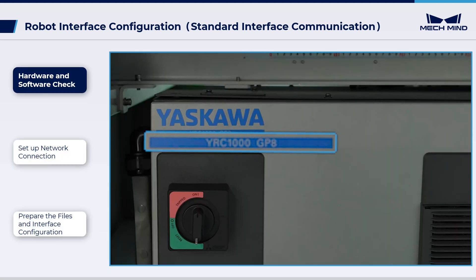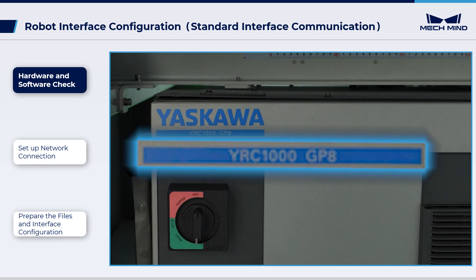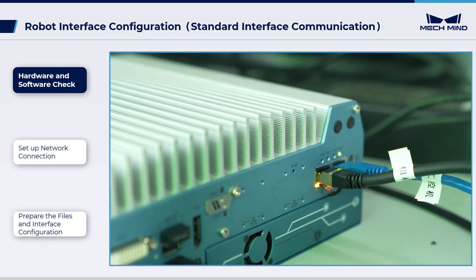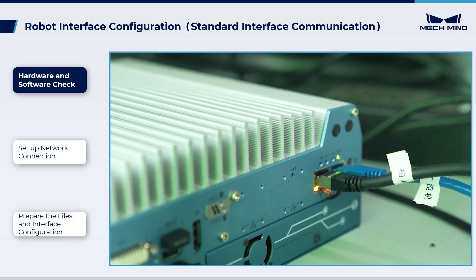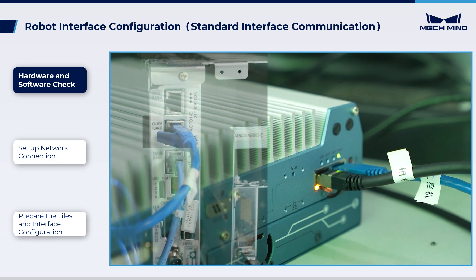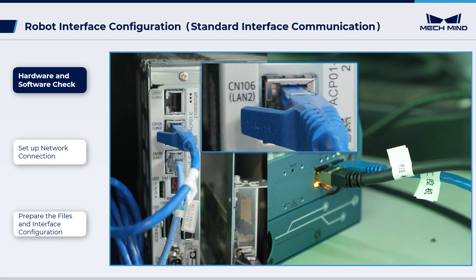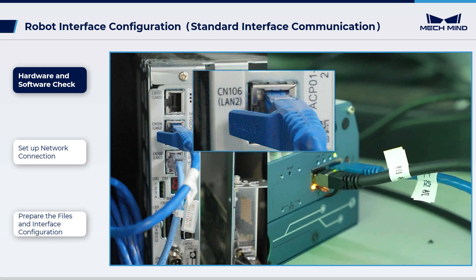First, let's start with the preparatory tasks. Please make sure that the chosen robot is a 6-axis Yaskawa robot, and confirm that the controller is YRC-1000. Next, check the hardware connections. You can open the robot controller when the robot is powered off. Ensure that one end of the robot's Ethernet cable is plugged into the LAN 2, CN106 port, and the other end is correctly connected to the IPC.